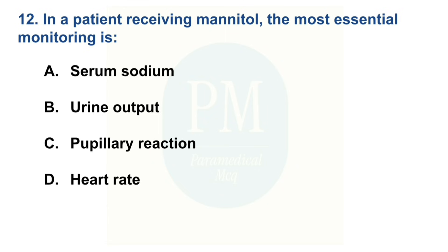In a patient receiving mannitol, the most essential monitoring is: Option A: Serum sodium. Option B: Urine output. Option C: Pulmonary reaction. Option D: Heart rate. The correct option is Option B — Urine output.